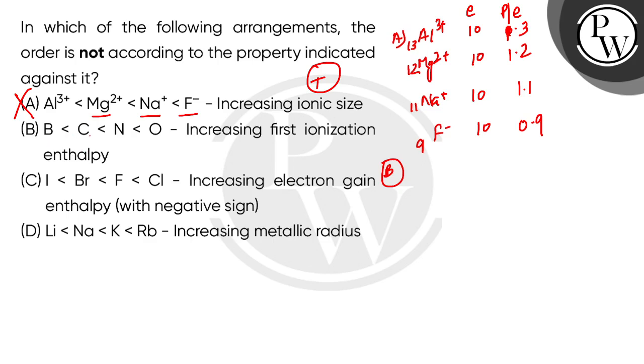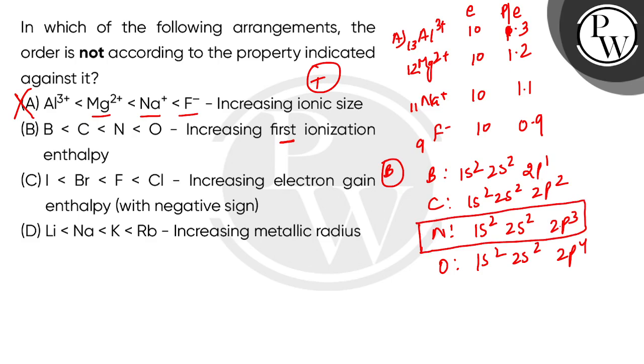Let's check the B option. Here we have B, C, N, O - increasing first ionization enthalpy. First ionization enthalpy is the energy required by the isolated gaseous neutral atom to remove one valence electron. If I look at boron's electronic configuration: 1s2, 2s2, 2p1; carbon: 1s2, 2s2, 2p2; nitrogen: 1s2, 2s2, 2p3; and oxygen: 1s2, 2s2, 2p4. We are going to remove one electron.